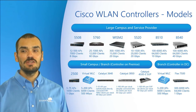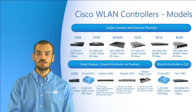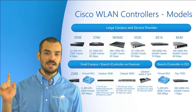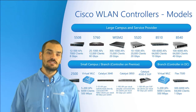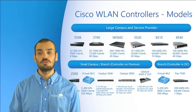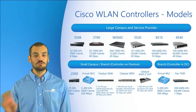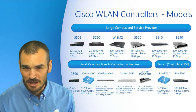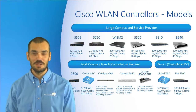Moving on to the 5508 series, this is intended for mid-sized to large deployments. It supports 500 access points in FlexConnect, Central, Mesh, or Office Extend modes, 5,000 tags, and 7,000 clients at 8 gigabit per second throughput. It supports the same special features as the 2500 series. The 5520 series is basically a bigger version of the 5508, but optimized for 802.11ac Wave 2.